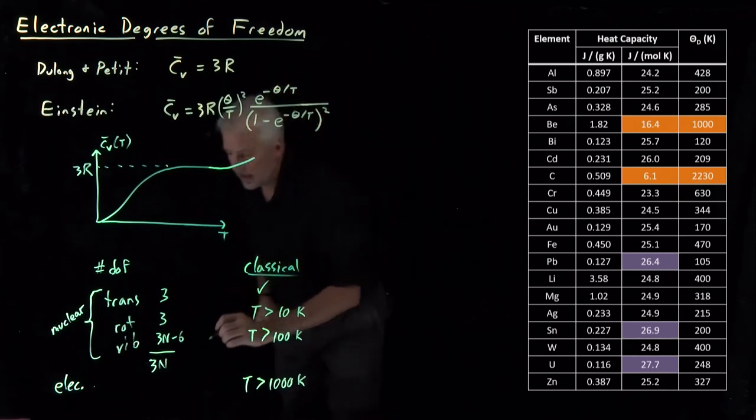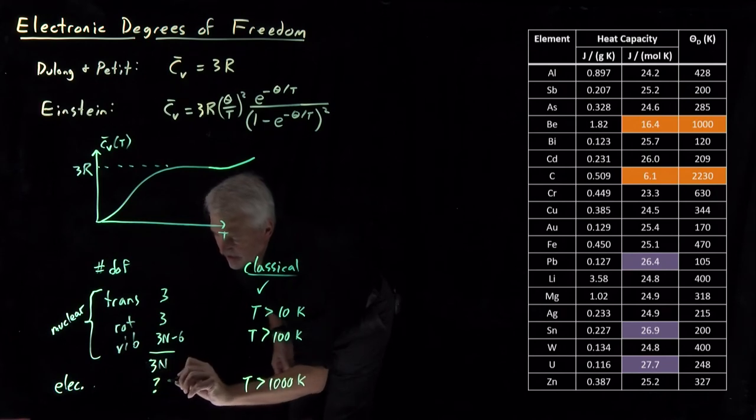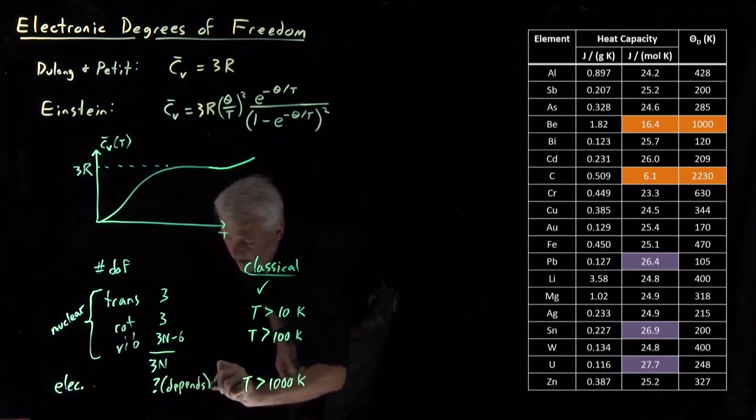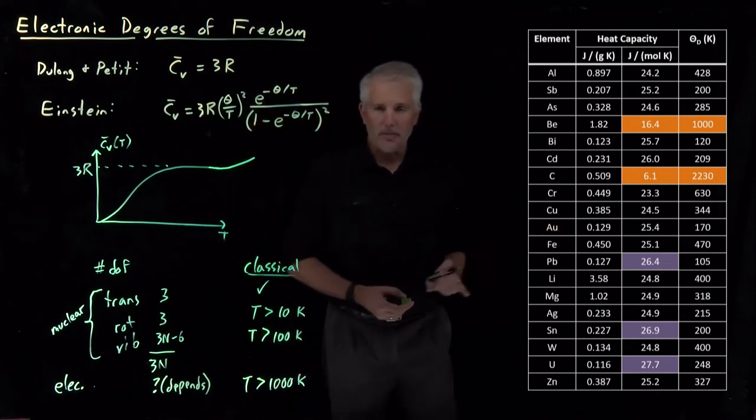So how many additional degrees of freedom do we have? That totally depends on the substance. It depends on the electronic structure of the substances.